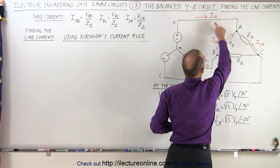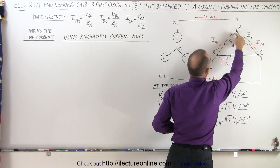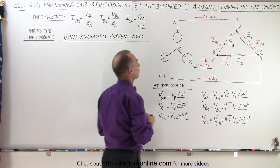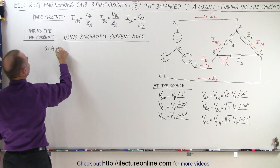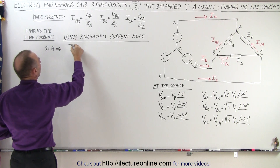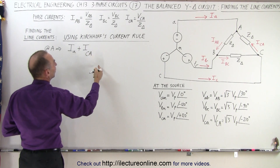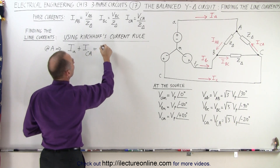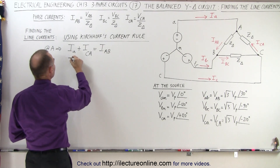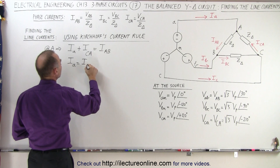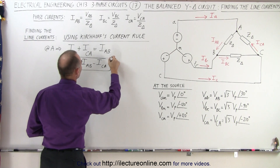Looking at node A, we can see that the line current IA enters the node, the phase current ICA enters the node, and the phase current IAB leaves the node. So at node A, we can say that IA plus ICA equals IAB, which means that IA is equal to IAB minus ICA. That is how we determine the line current IA.